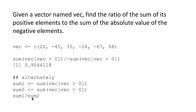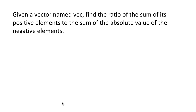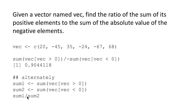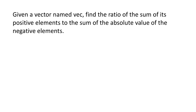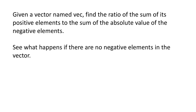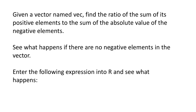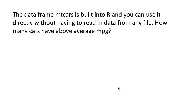Actually, sum1 divided by sum2 is wrong — it should be sum1 divided by the absolute value of sum2, or equivalently minus sum2. So take that with a pinch of salt: sum1 divided by minus sum2, or the absolute value of sum2. The next variation of this problem asks: see what happens if there are no negative elements in the vector. That means you will get zero in the denominator. Explore this and try entering the expression in R to see what happens — do a little research to find out what's going on.